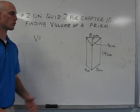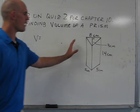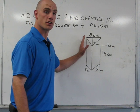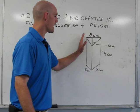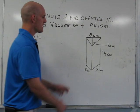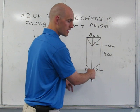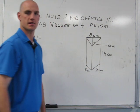In number 2 on quiz 2 for chapter 10, we'll find the area and the volume of a triangular prism. We know that it's a triangular prism because it's a triangle for each base and it has rectangles on the side.